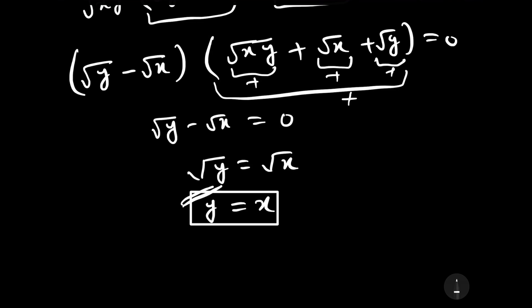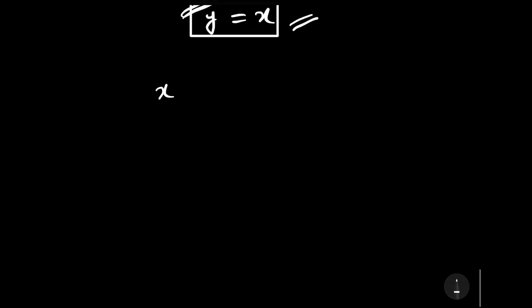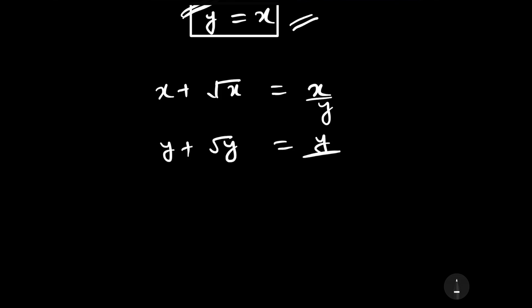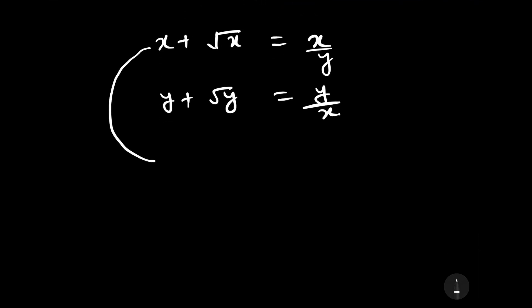Substituting y = x in the first equation leads through the same process to the same answer x = (3−√5)/2. Now let us see whether we can solve this equation without first assuming that y equals x.